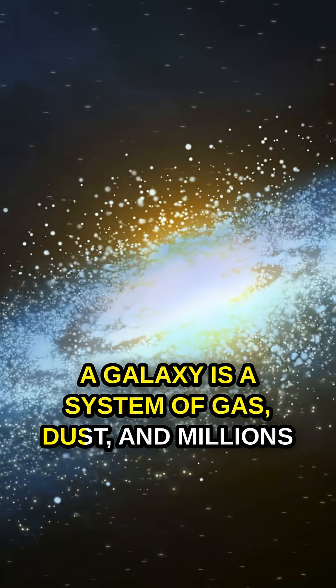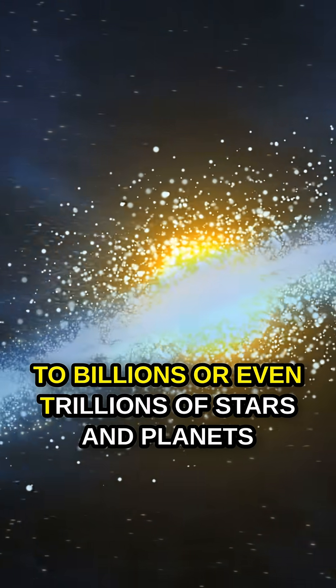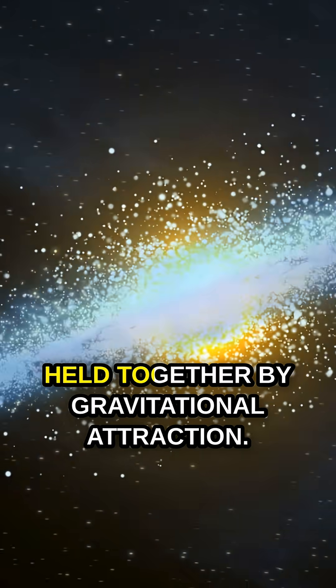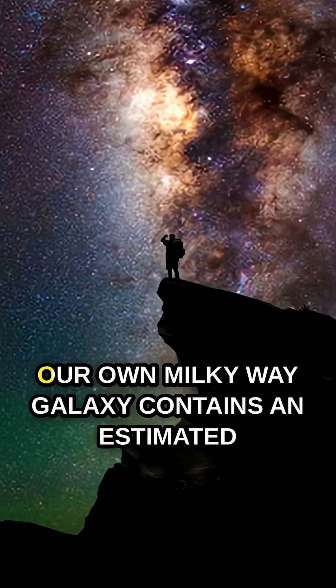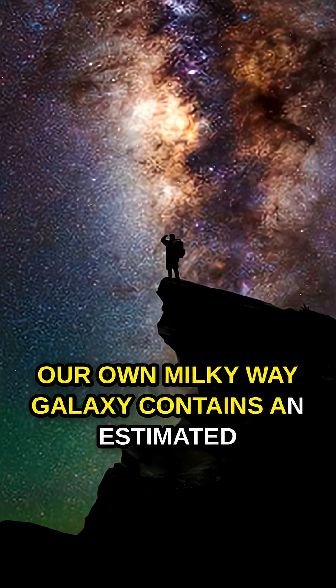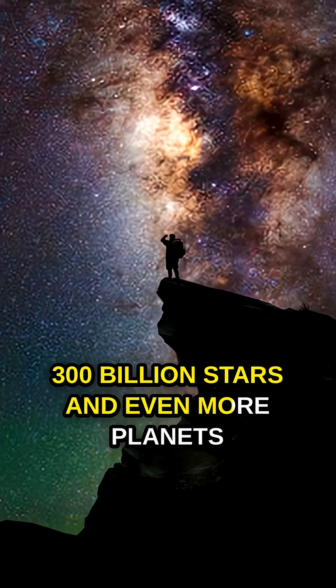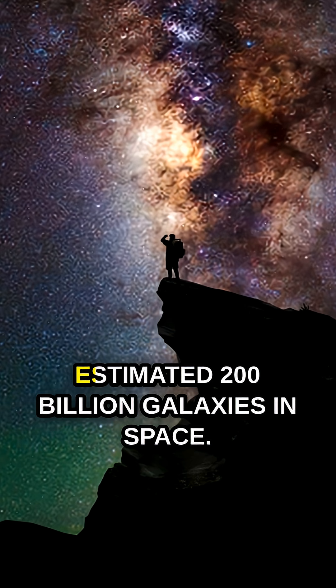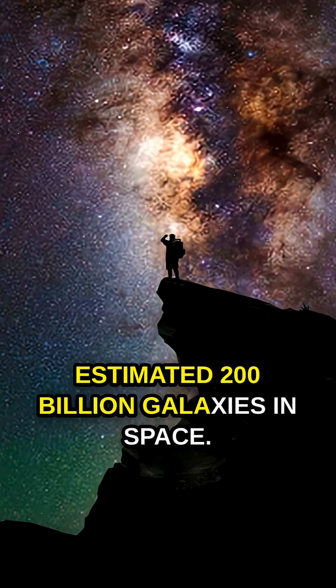A galaxy is a system of gas, dust, and millions to billions or even trillions of stars and planets held together by gravitational attraction. Our own Milky Way galaxy contains an estimated 300 billion stars and even more planets, and it's just one of the estimated 200 billion galaxies in space.